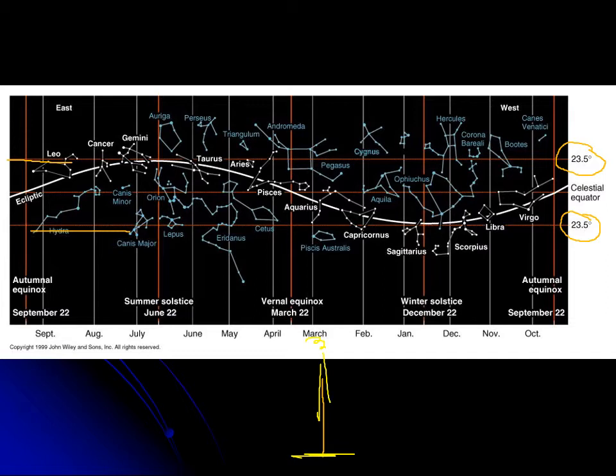To have no shadow, you'd have to be directly under the Sun — which means you'd have to be between 23.5 degrees north and 23.5 degrees south latitude. The farthest north where the Sun is ever directly overhead is 23.5 degrees north latitude, which we call the Tropic of Cancer. The farthest south is 23.5 degrees south, the Tropic of Capricorn.